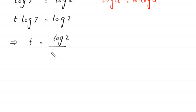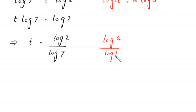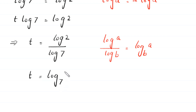Using the change-of-base property, log a divided by log b equals log base b of a, this becomes t equals log base 7 of 2. This is the final answer of this equation.